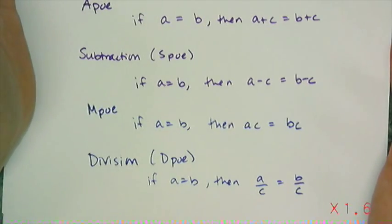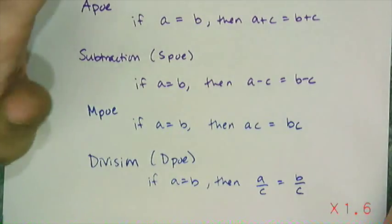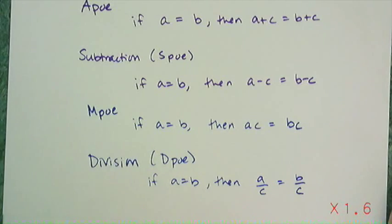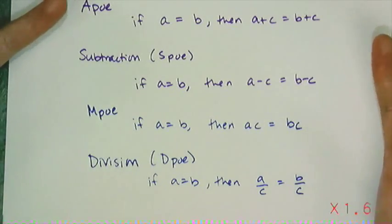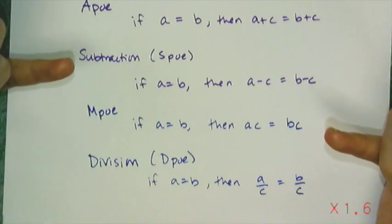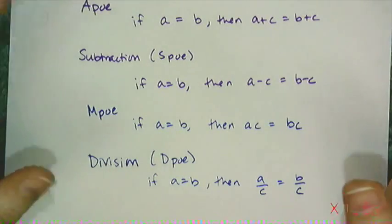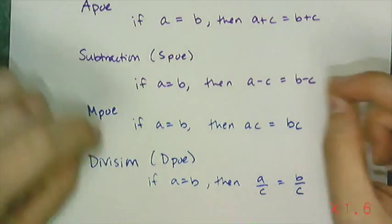And which one you use depends on what the equation gives you. The whole point of solving an equation is to undo whatever has been done to x. So if something has been subtracted from x, then you're going to add. If something has been divided, then you're going to multiply. So you want to use the inverse operations, the operation that undoes.